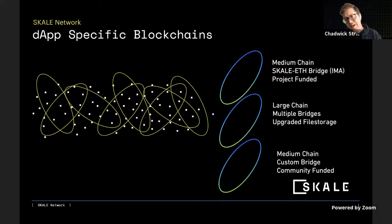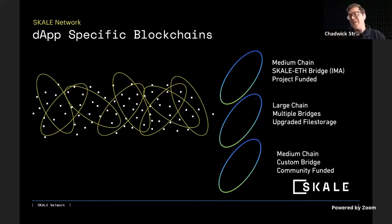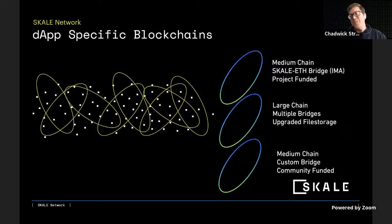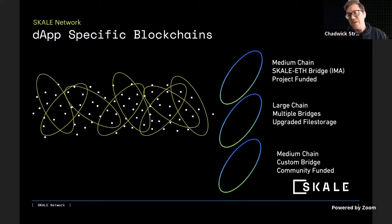For example, at the top we have one sort of proxy as a SCALE chain. It could be a different size — we have three sizes: small, medium, and large. Each size attributes to the amount of CPU, memory, and storage resources provided, similar to a T2 medium or XL large AWS instance. A medium chain has medium CPU, memory, and storage resources, and can be customized to use the SCALE ETH bridge, called the Interchain Messaging Agent or IMA.